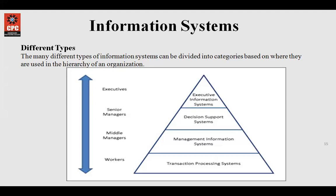Then comes the Executive Information System (EIS). EIS is basically for top management. Decision making is done by executives, and it helps them collect and analyze data of the entire organization and filter what is most important and specific. Since top management doesn't have time to analyze everything in detail, the EIS is dependent upon the three systems below it: TPS, MIS, and DSS. Thank you.